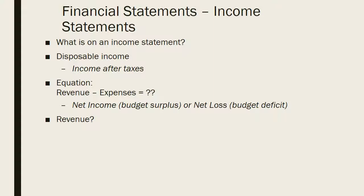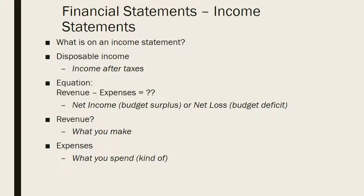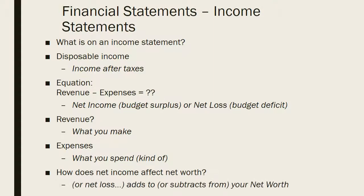So what is revenue? Simply put, it's what you make — we'll provide more details on that later. Expenses are essentially what you spend, plus a little bit else. How does net income affect your net worth? Well, your net income simply adds to — or if it's a net loss, subtracts from — your net worth. So if my net worth is $10,000 and my net income during a month is $1,000, my net worth at the end of the month is $11,000.